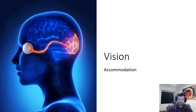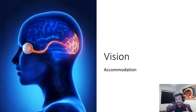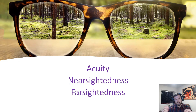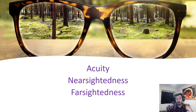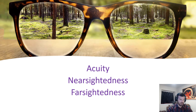Next we need to talk about accommodation. Accommodation is when the lens changes shape in order to refract light back — that's what accommodation is. It is the process of the lens changing shape to help us focus in on certain things. That ability, along with the shape of your eyeballs, is going to determine our visual acuity — how sharp our vision is.